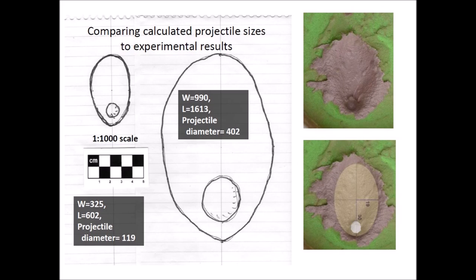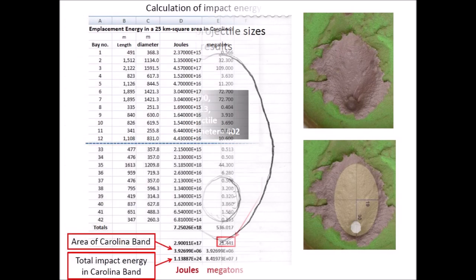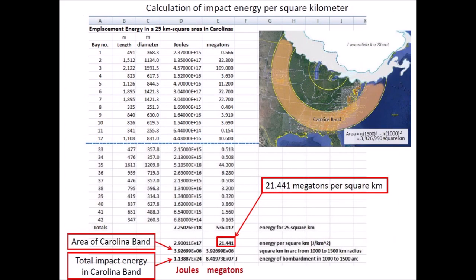The best way to check if the projectile size calculator produces reasonable results is to compare against experimental results. I drew ellipses at a 1 to 1000 scale on a sheet of paper and added circles for the calculated projectile size. The comparison with the experimental results shows that the calculated projectile sizes have a similar ratio relative to the bay size; therefore, the results based on this calculator are likely to produce adequate estimates. After adding up the energy for all the bays within the 25 square kilometer area and dividing by 25, we conclude that the impact energy per square kilometer is 21.4 megatons.